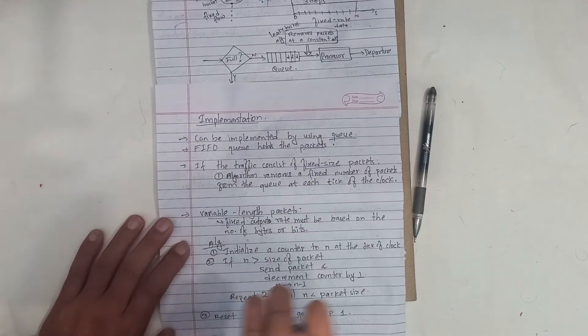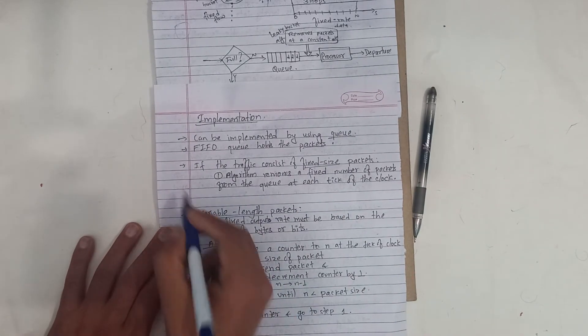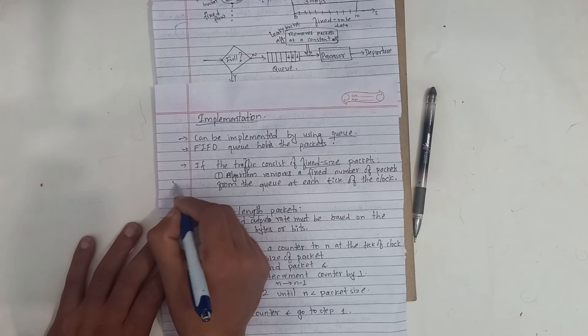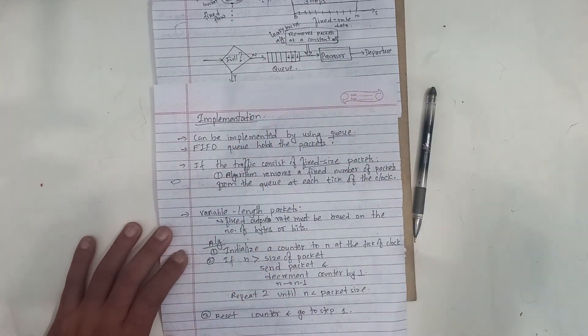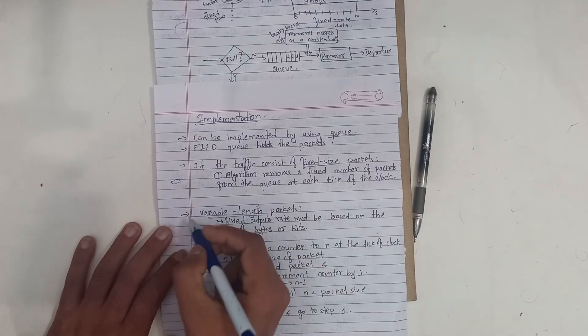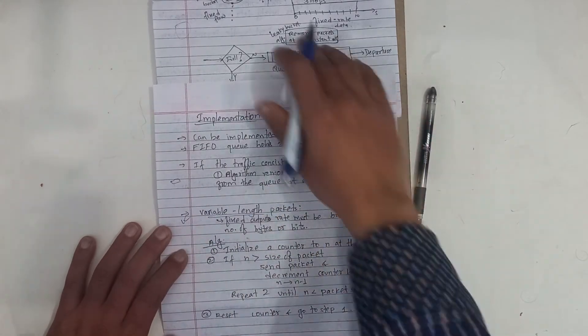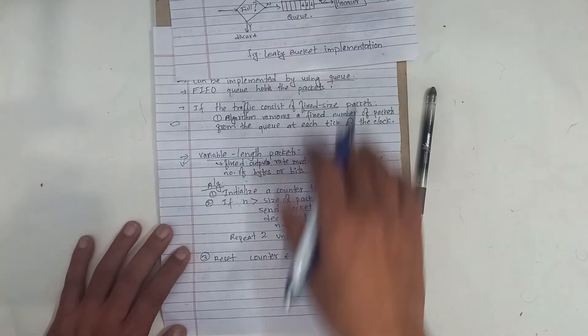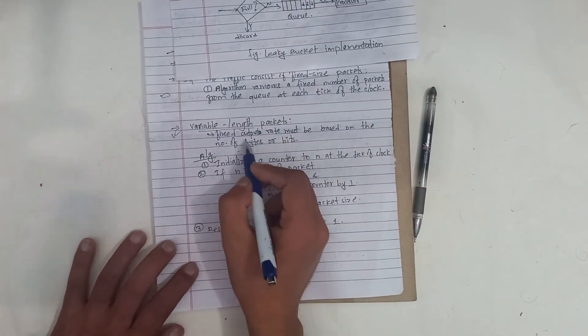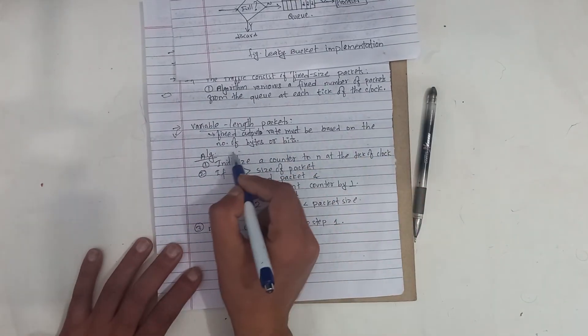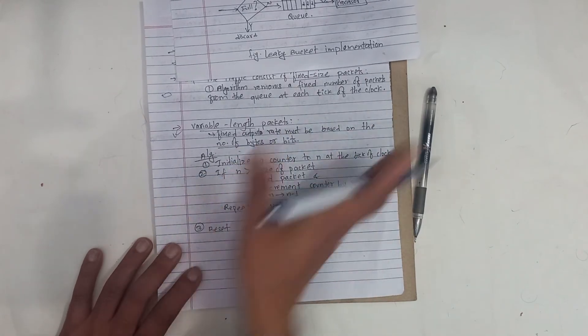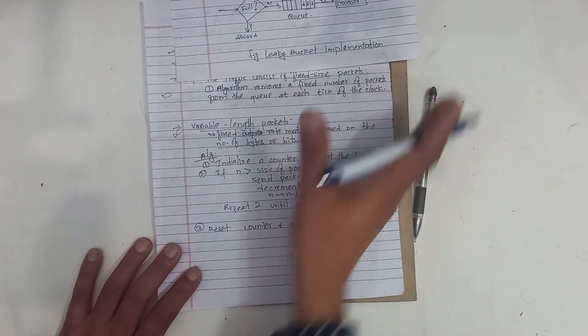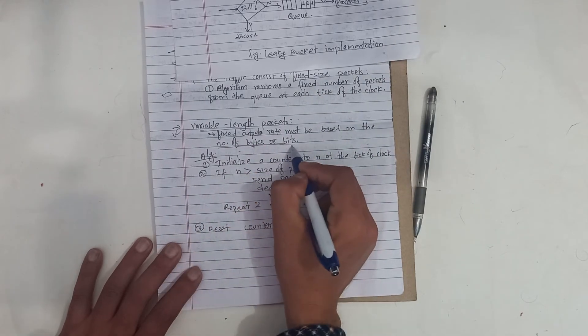At each tick, we remove a fixed number of packets to maintain constant rate. For variable length packets, fixed output rate must be based on the number of bytes or bits. We need to count bytes or bits, not just packets.